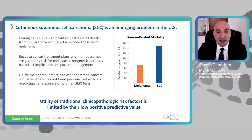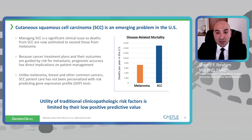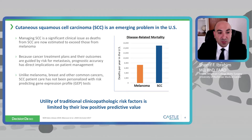It is expected that deaths from squamous cell carcinoma will surpass that of melanoma. Because cancer treatment plans and their outcomes are really guided by the risk for metastases, the ability to accurately predict which squamous cell carcinomas will go on to a poor outcome — regional or distant disease — is really of the utmost importance.